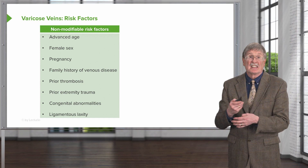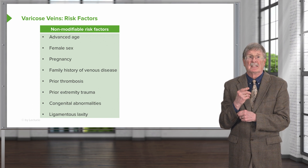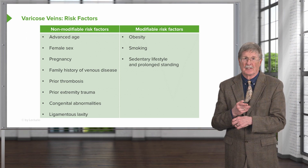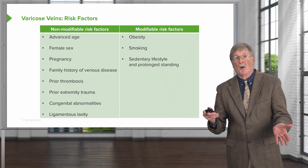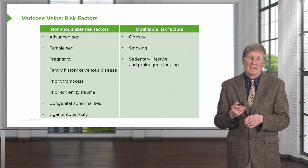What puts you at risk? There are non-modifiable factors — things you're stuck with — like advanced age, female sex, prior pregnancy, family history of venous disease, prior thrombosis, prior trauma to the extremity, congenital abnormalities, or just laxity of the venous wall structures. Things you can theoretically modify are obesity, smoking, and sedentary lifestyle. In fact, the more you exercise, not only will you improve obesity, but you're also doing that muscular milking of the venous circulation.